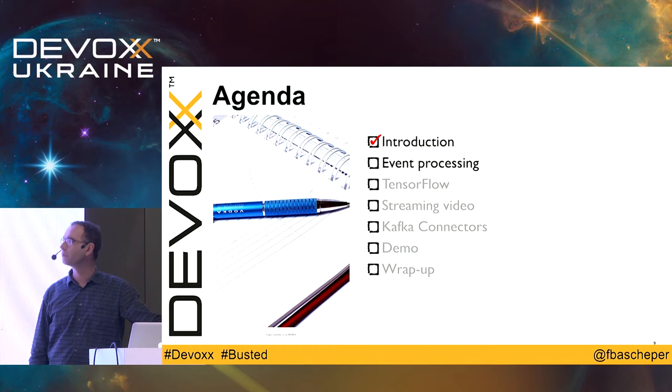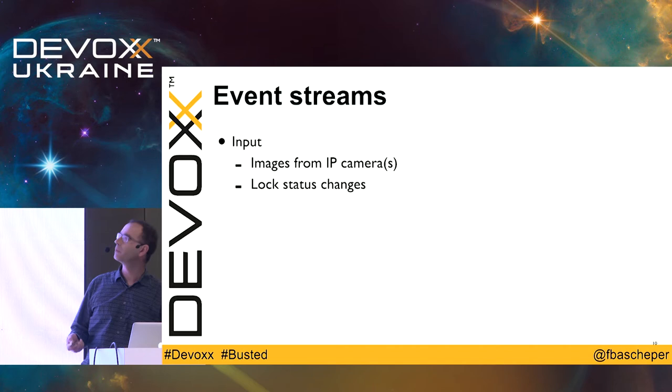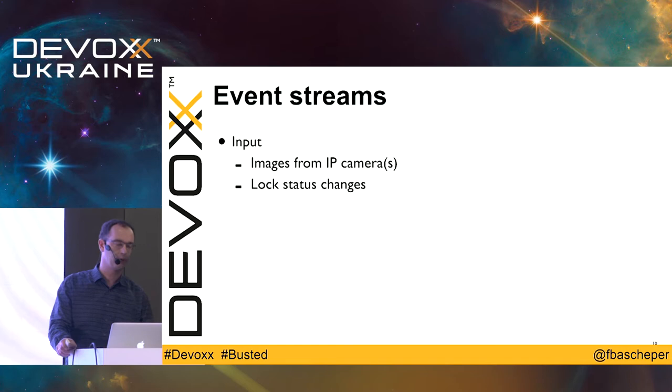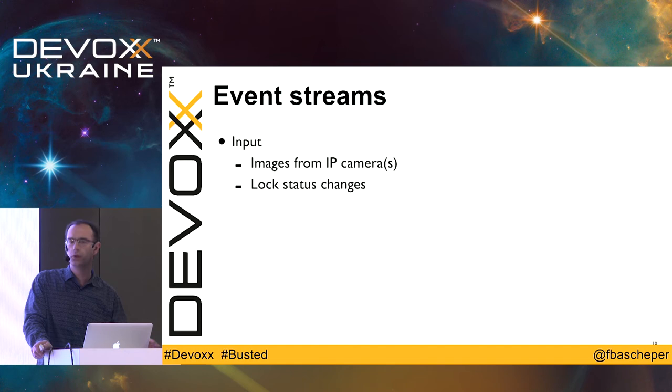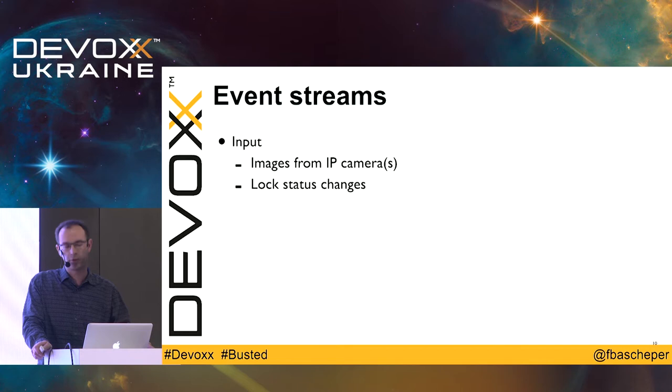So that was a quick introduction. What are the event streams occurring in this application? Basically there are two input events: images coming from the IP cameras, and lock status changes. The REST connector I'm using polls the Nuki API every minute, so I get an update of the current status of all locks every minute, and from that I can infer the lock status changes. The output events are, of course, the burglar alerts themselves.